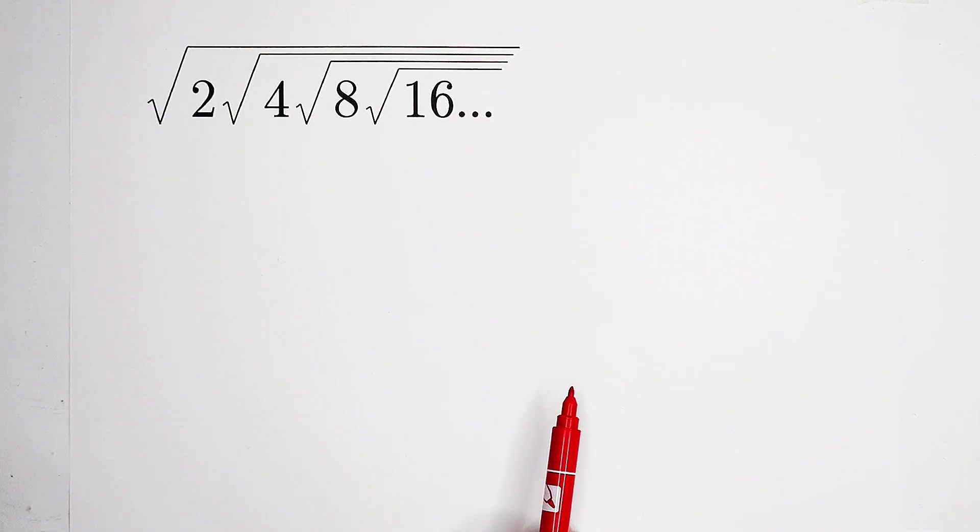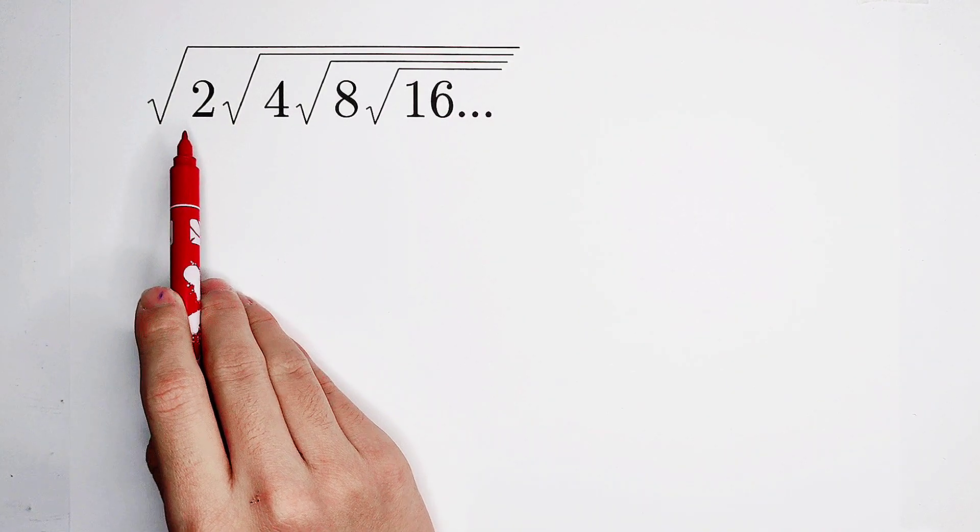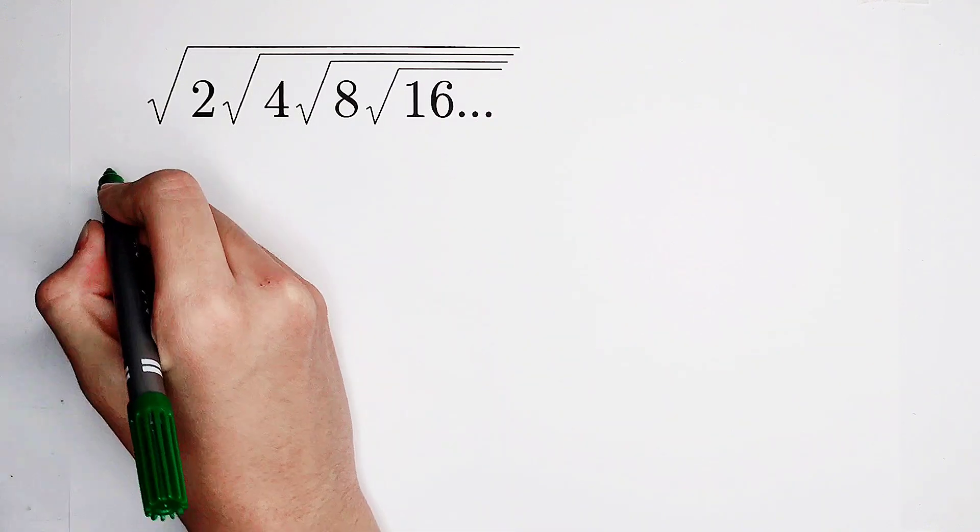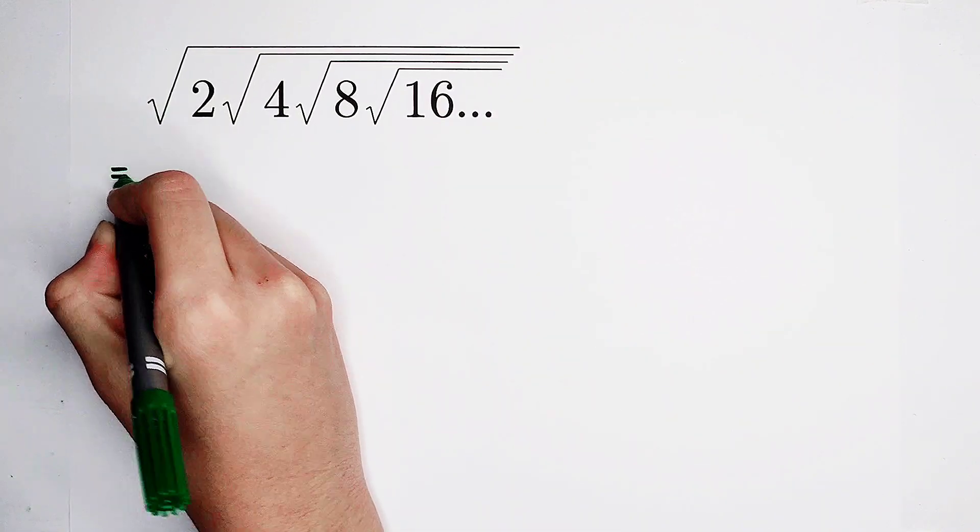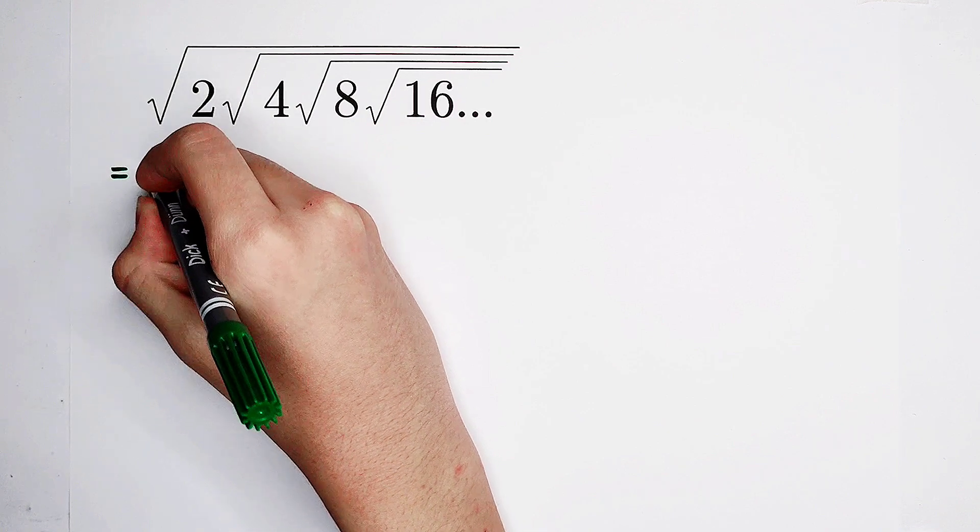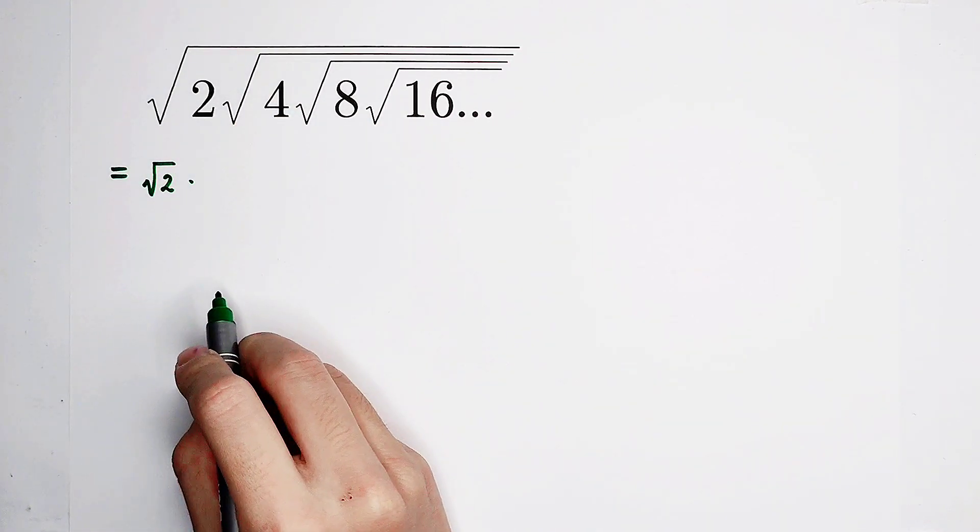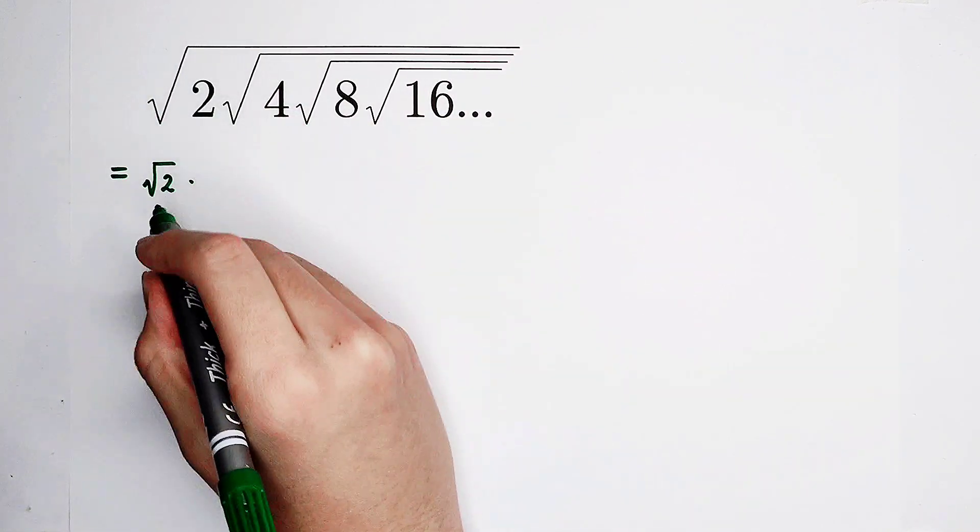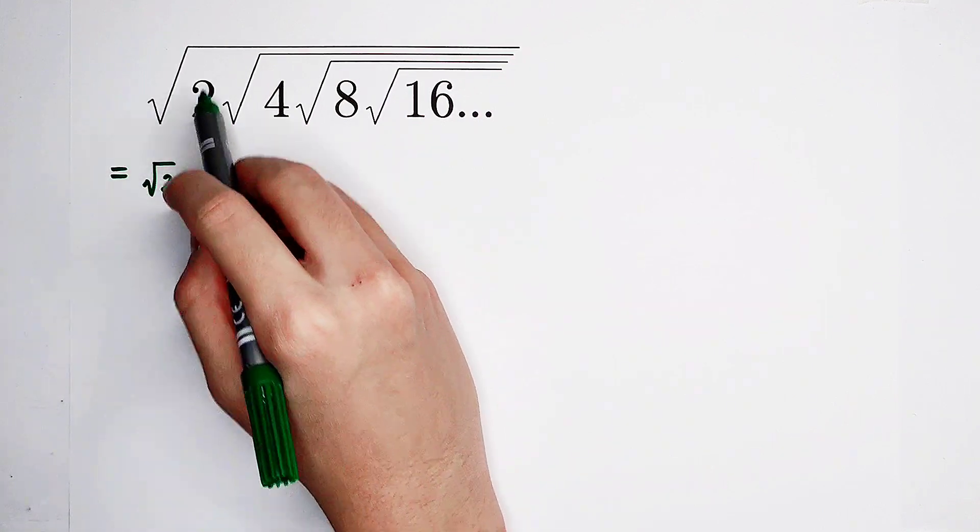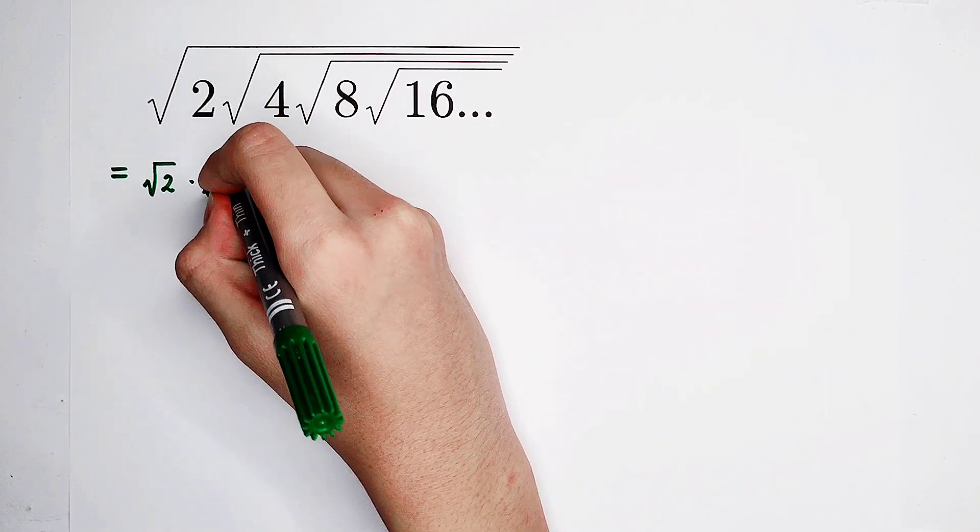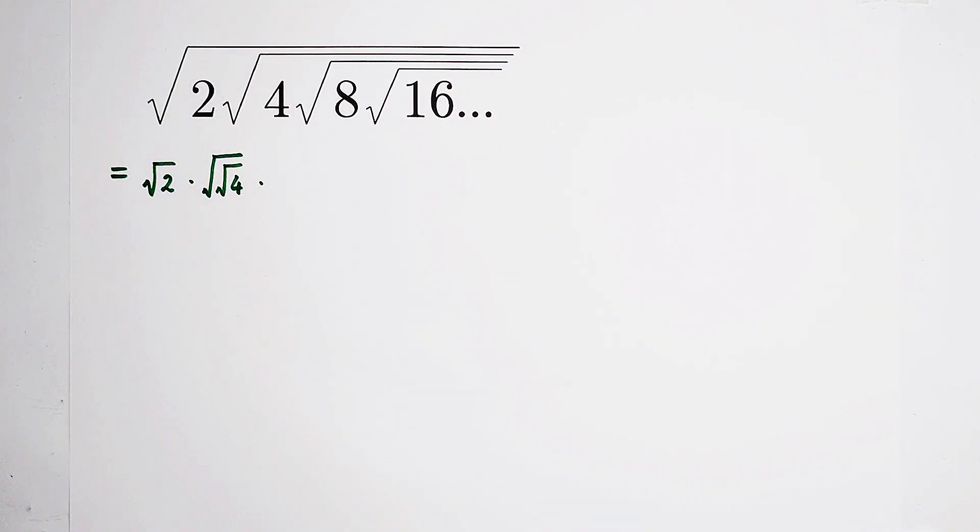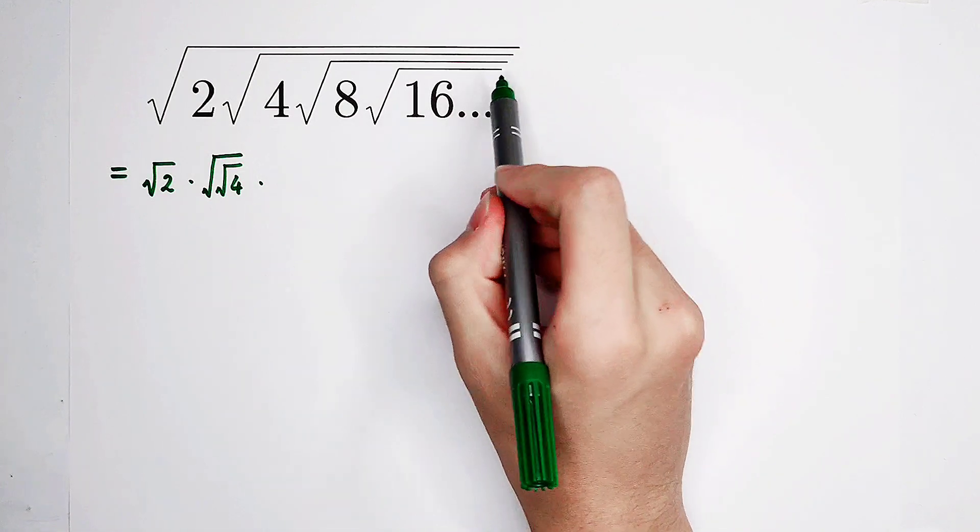One of the ideas is to separate the numbers from each other. Okay, so firstly, it is square root of 2. Secondly, square root of square root of 4. Of course, it is a multiplication. It is square root of 2 times square root of square root of 4. And thirdly, square root of square root of square root of 8. Oh my god, 3 square roots. And for 16, there are 4 square roots.